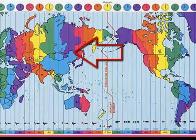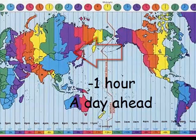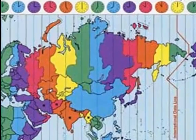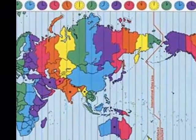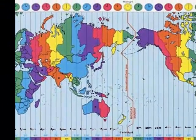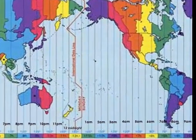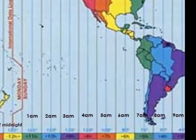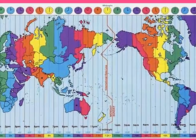When you move to the left, passing the International Date Line, you subtract one hour and you will always be a day ahead. Therefore, countries on the west side of the International Date Line are always a day ahead, while countries on the east side are always a day behind.